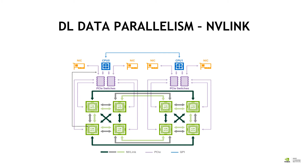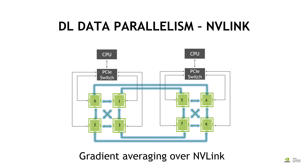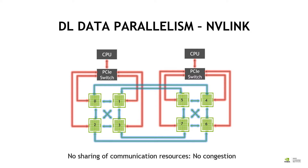So how do we do this? The first step always starts from the CPU. Any data load will always start from the CPU. You load first your batches — your different batches — to the different GPUs from the CPU. And then you do the gradient averaging over the NVLink. In this way, you make sure that the machine is fully loaded and you don't have any bottleneck or congestion when distributing the workload.